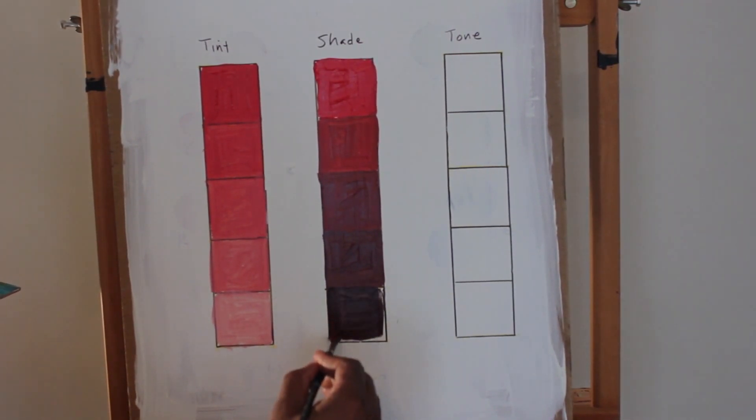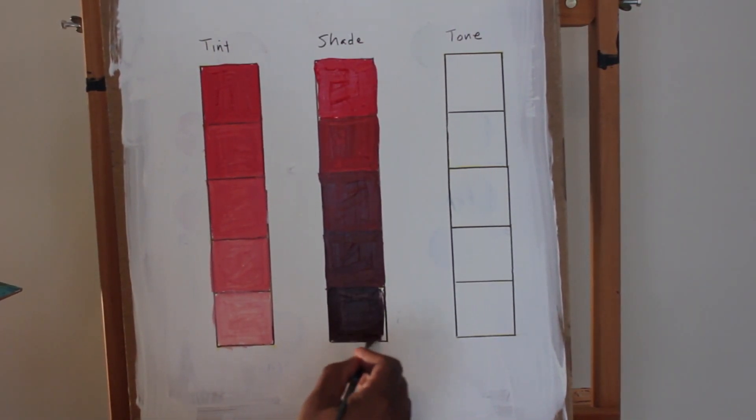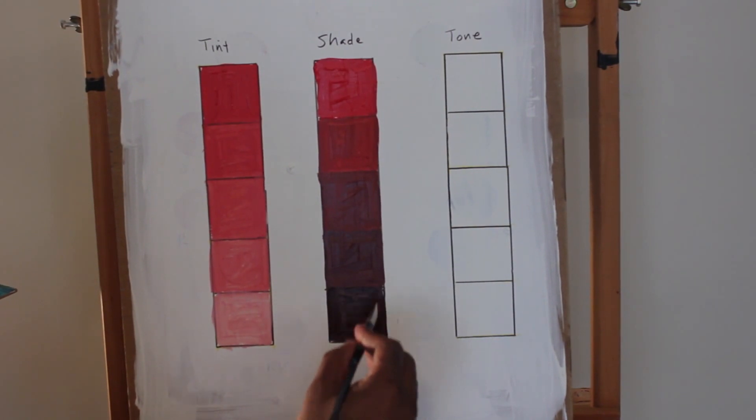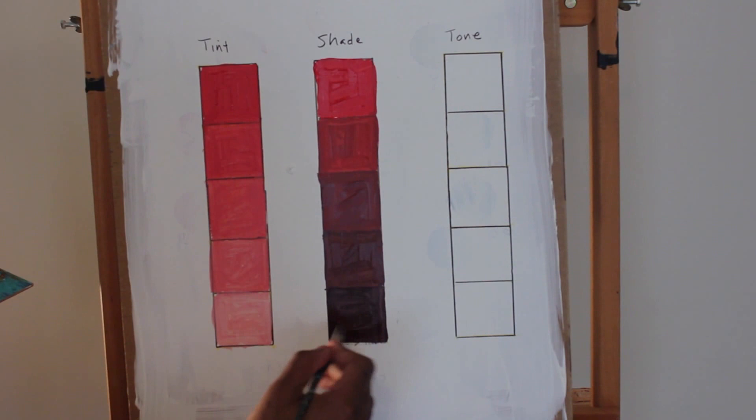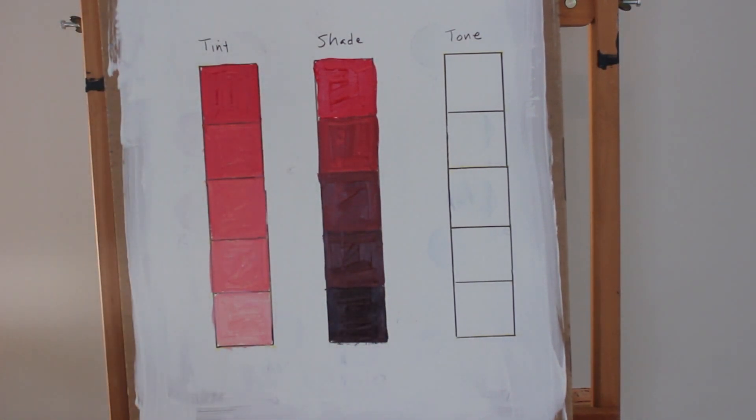When I'm painting a shadow on a particular object, say, for instance, when using red, if I was painting a shadow on a red apple, I wouldn't use black because it'll dull the color. I would definitely use the complementing color. Whenever you're doing the shadow for a color, say an apple, for instance, I'll use the complementing color. The complementing color would be green for the red.